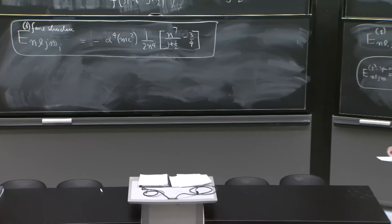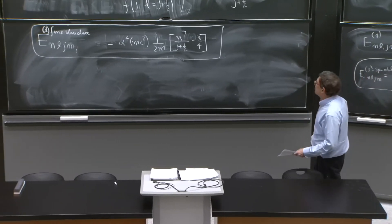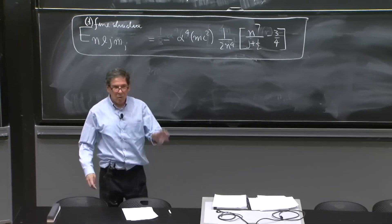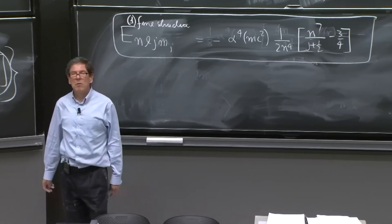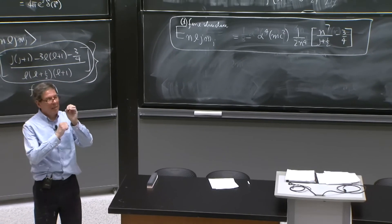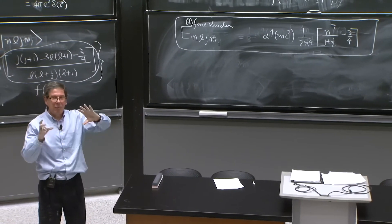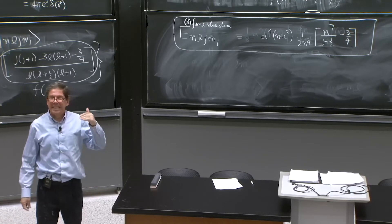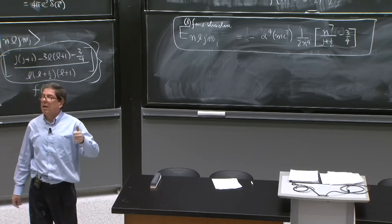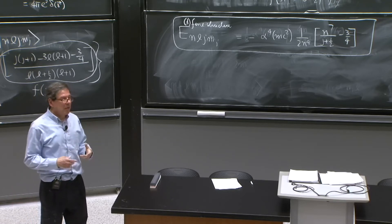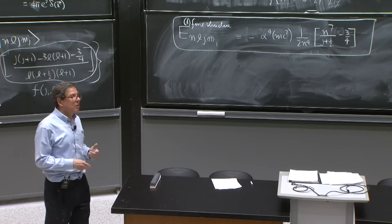So a few comments about this. People that look at the Dirac equation more seriously would have expected this result. It turns out that in the Dirac equation, the symmetry and the rotations, the generator of rotations, is exactly j, which is l plus s. That generates rotation. That commutes with the Hamiltonian.